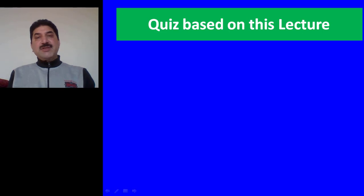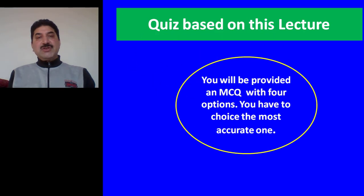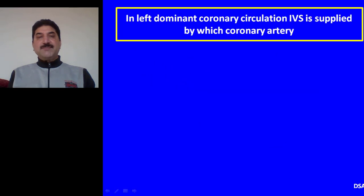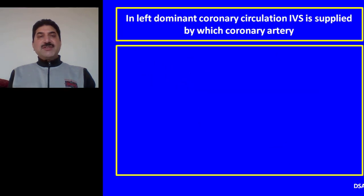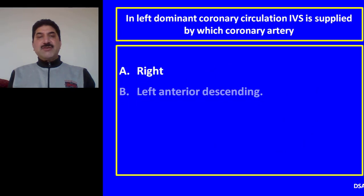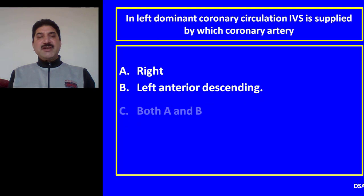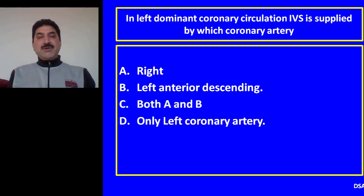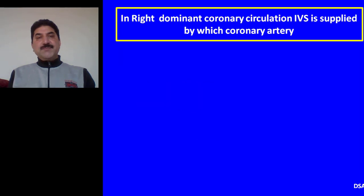Let us go for a quiz based on this lecture. You will be provided an MCQ with four options and you have to choose the most accurate one. Question 1: In left dominant coronary circulation, the interventricular septum is supplied by which coronary artery? Options: Right; left anterior descending; both A and B; only left coronary artery. Only left coronary artery is the correct option.